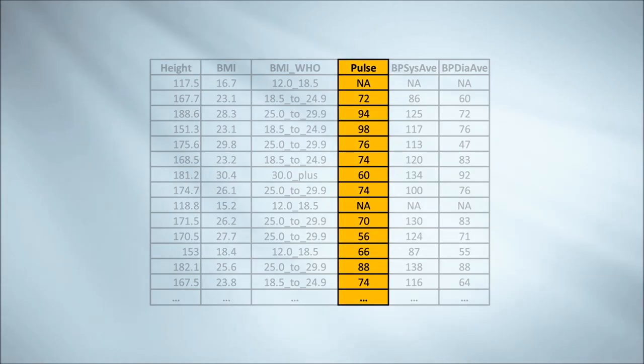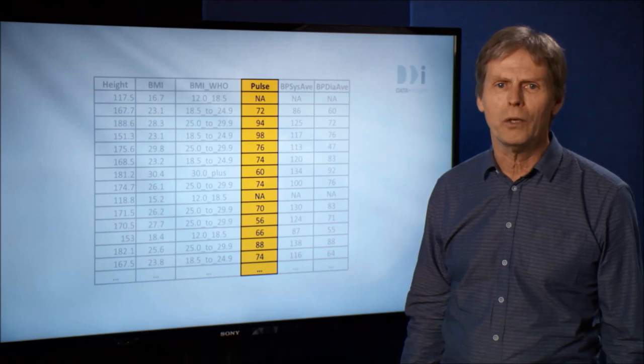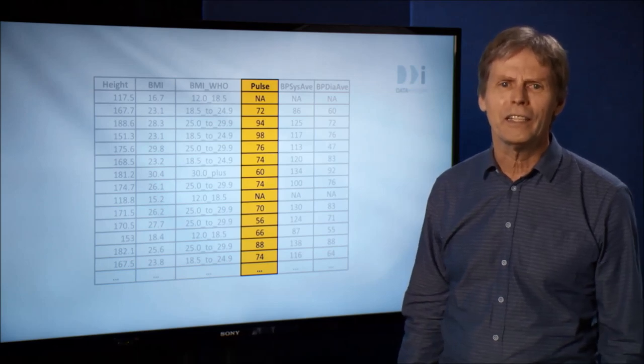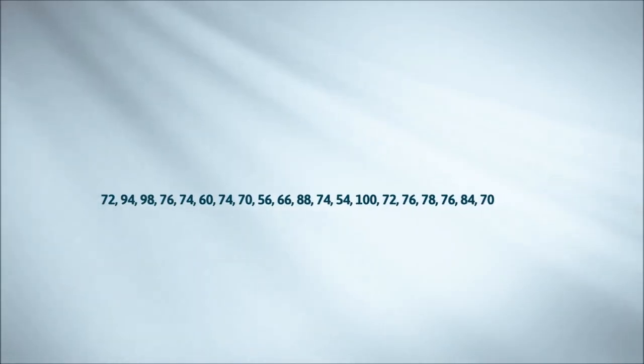We'll begin with the resting pulse rates of people in the NHANES dataset. What's your typical resting pulse rate? Mine's about 70. Very fit athletes have pulse rates as low as 40. Here are the first 20 pulse rates in our NHANES dataset.